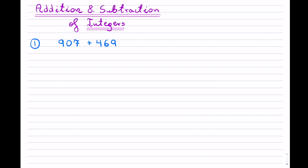Okay, so addition and subtraction of integers. In this example and the examples that follow, I will show you all the different variations that can happen to two numbers with regards to addition and subtraction, possibly utilizing negatives and positives to solve. This first example, which is one that is extremely common if you're going through school, is the addition of basically two positive numbers.